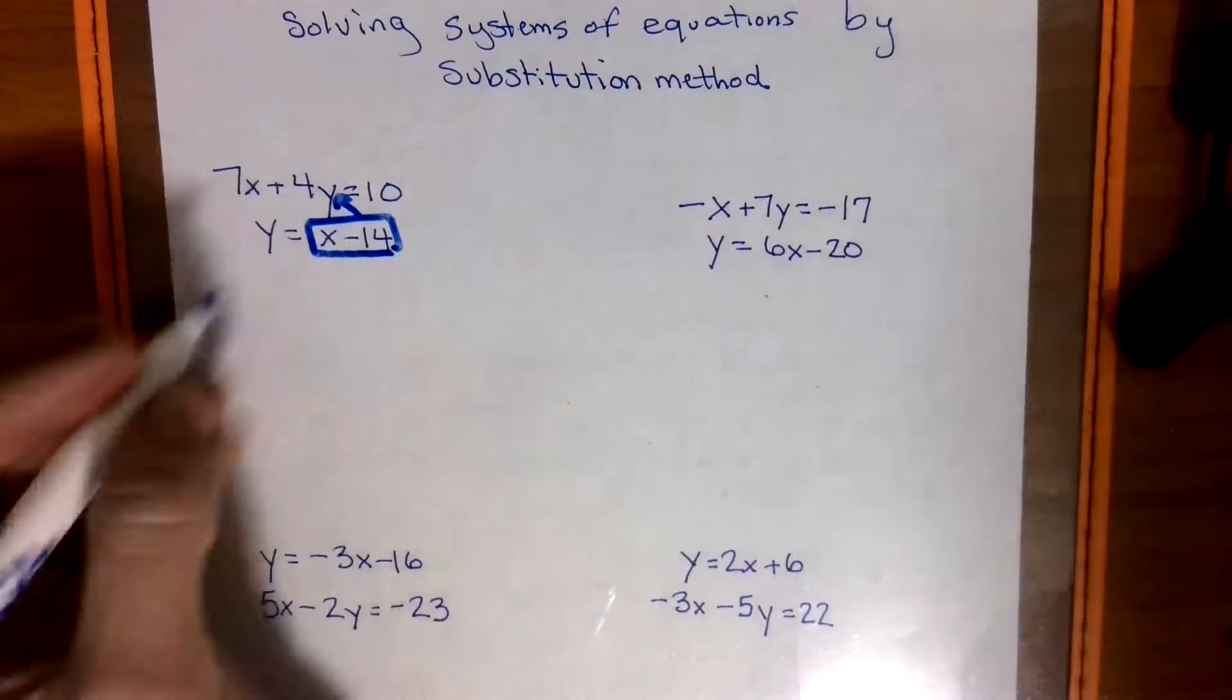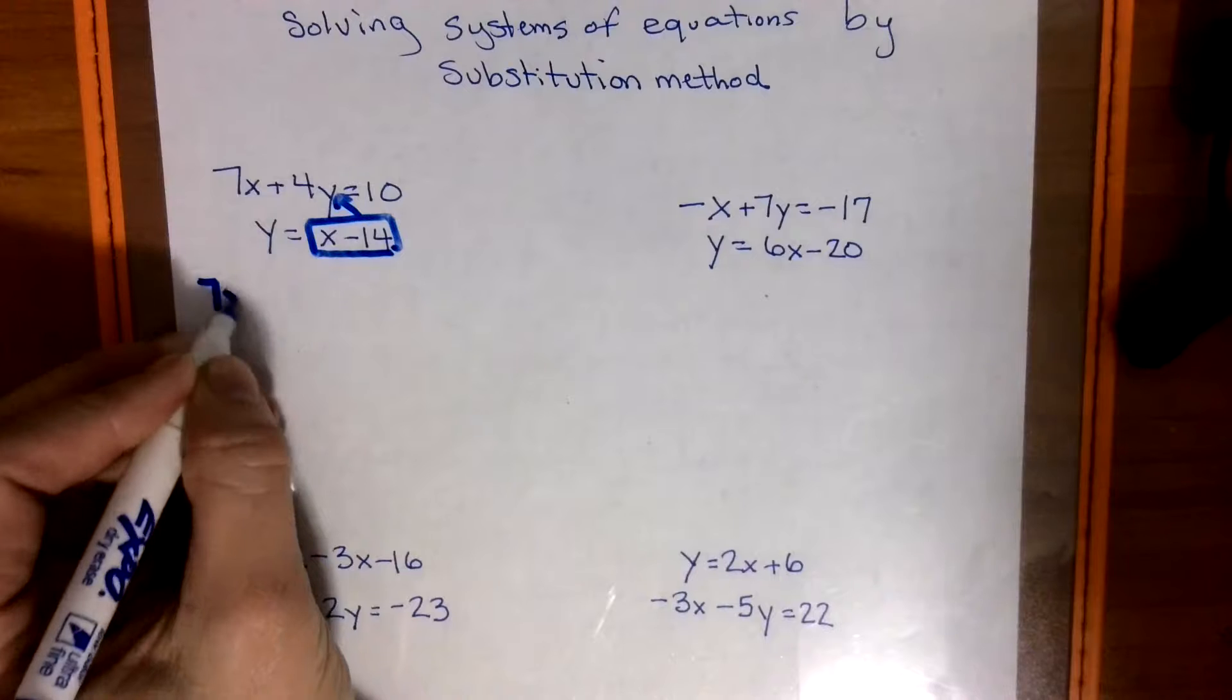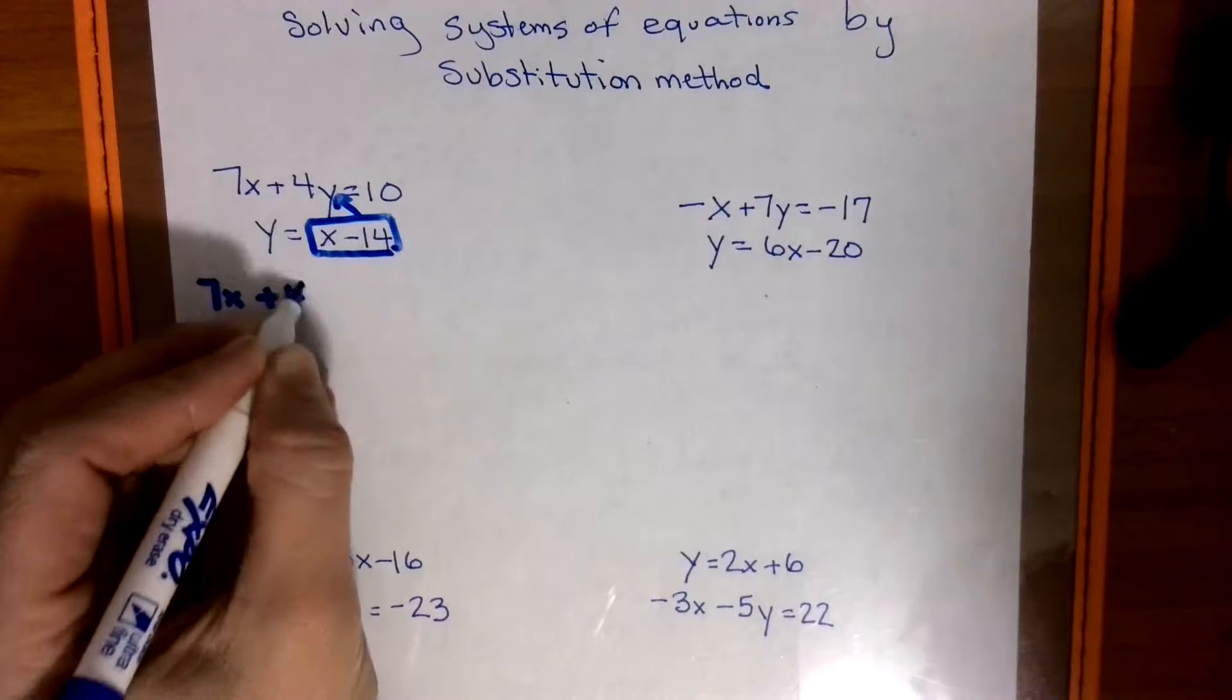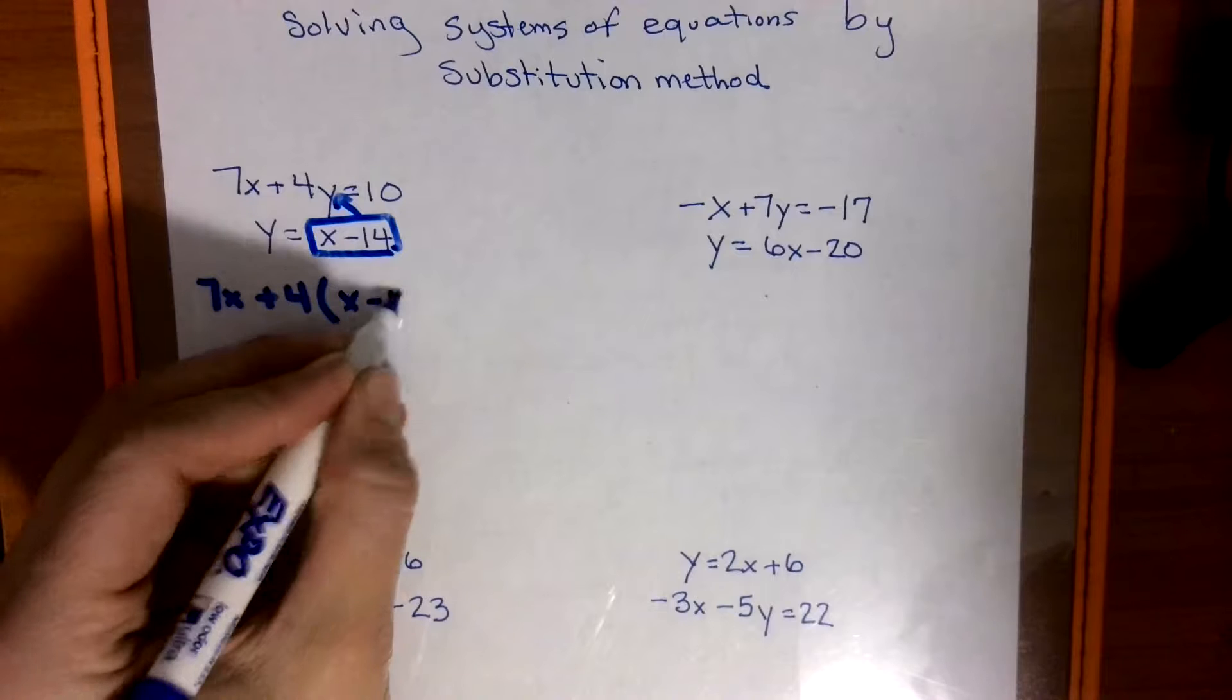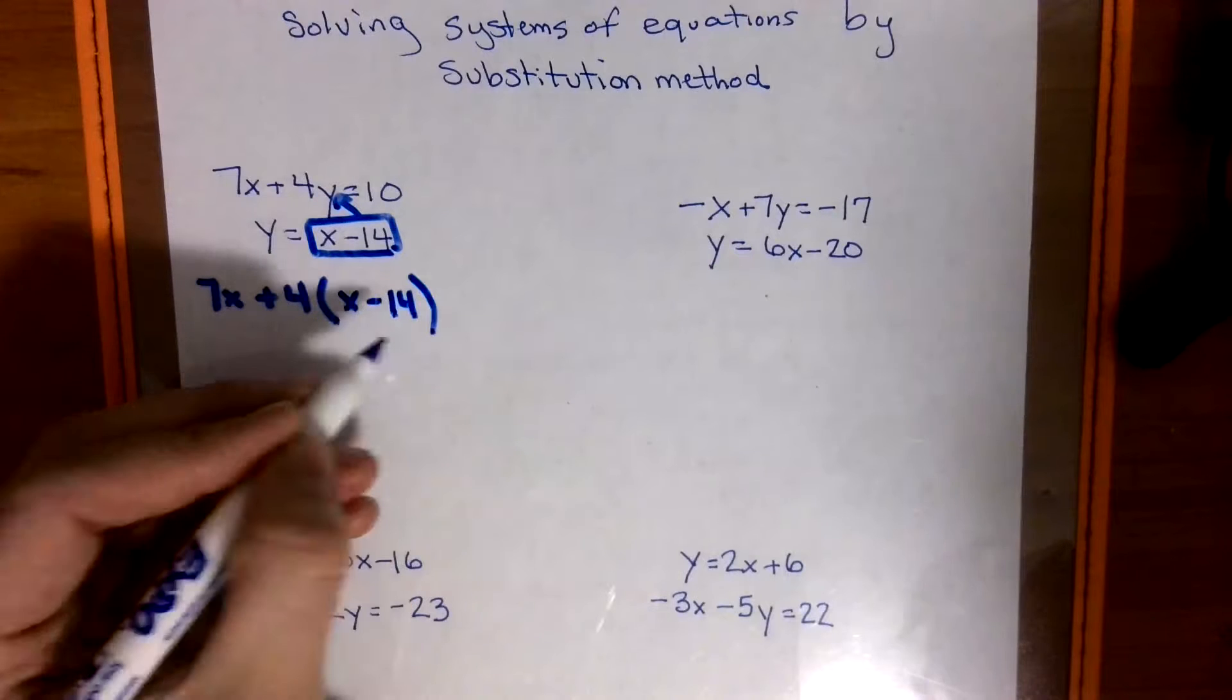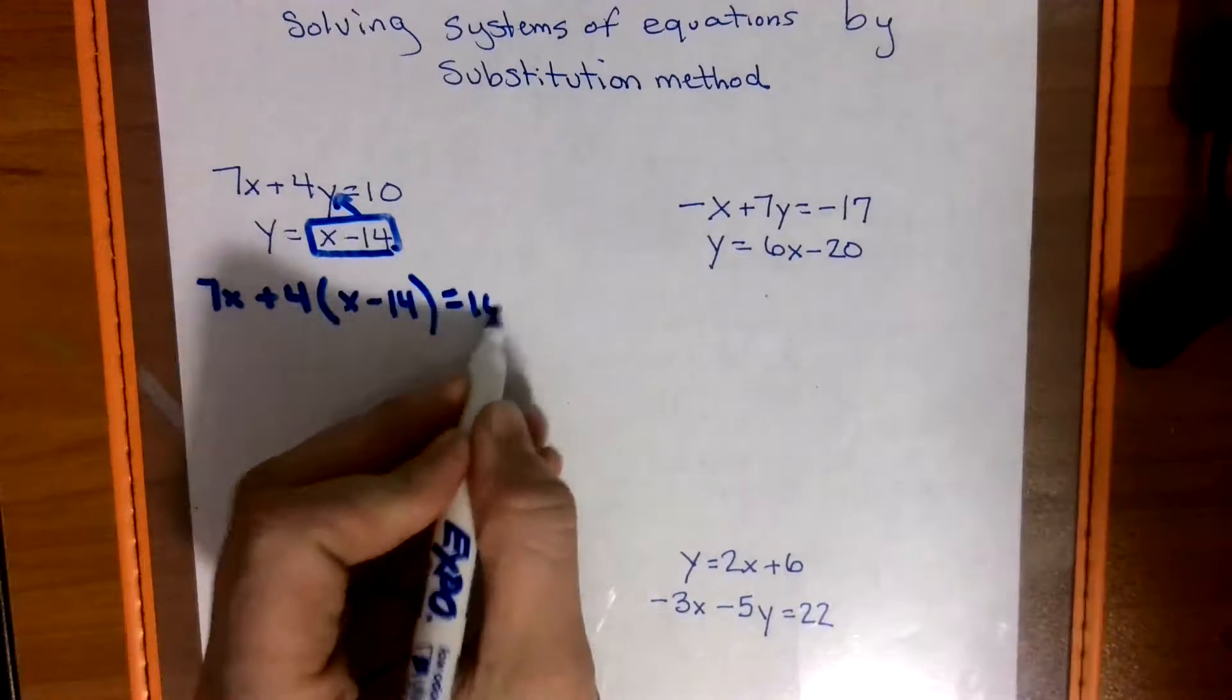So then you're going to rewrite that top line and you're going to have 7x plus 4 parentheses x minus 14, close the parentheses, equals 10.